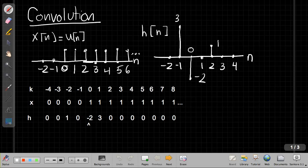Hi, this is John Buck. I'm going to go through another example of convolution. There are some questions about how do we do it graphically when one of the inputs goes on forever, like a unit step. So here's another simple example.